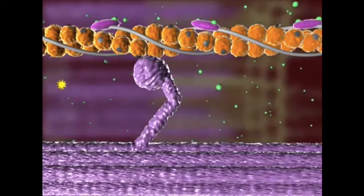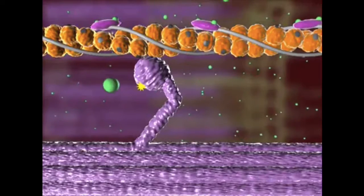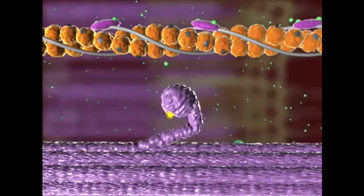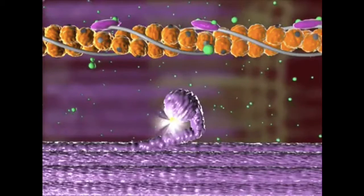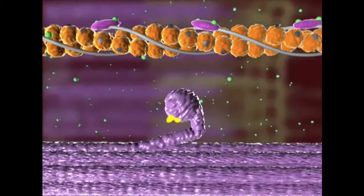Next, ATP binds to the myosin head, causing it to detach from actin. When the ATP is broken down to ADP and phosphate, the myosin head extends.